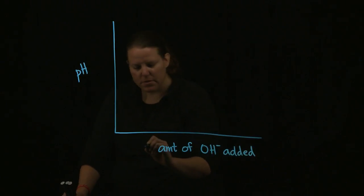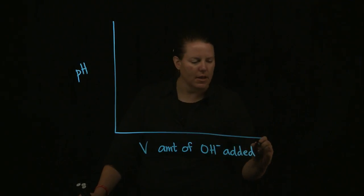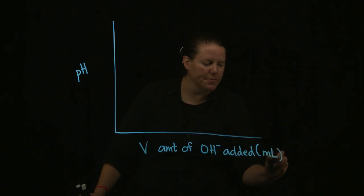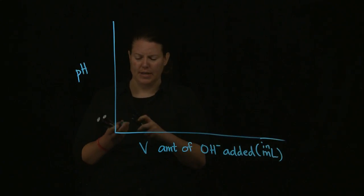So this is a volume amount, we'll call it B amount, and it would be in something like milliliters. pH is in pH units, it's a little different.